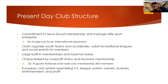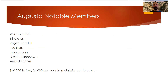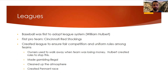Present day structure involves a commitment to serve broad membership, international expansion of sports clubs, clubs organizing youth teams and academies, adult recreation leagues and social events. Some clubs are highly competitive, some are more for leisure. We have large memberships and loyal fan bases. Augusta National is a male-only golf club with only 300 members — $40,000 to join and $4,000 per year on top of that. Members include famous people like Lou Holtz, Roger Goodell, Bill Gates, and Warren Buffett.